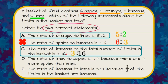Just to make sure I haven't made a mistake, I'm going to go through D and E to verify they're really false. The ratio of limes to apples is one to four. Limes is two, apples is six, and that simplifies to one to three. So D is false — it's not one to four, it would be one to three.